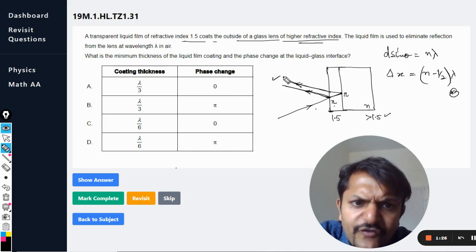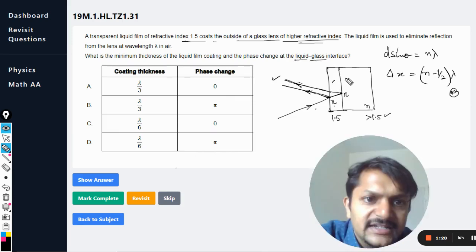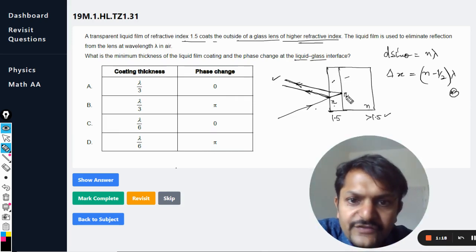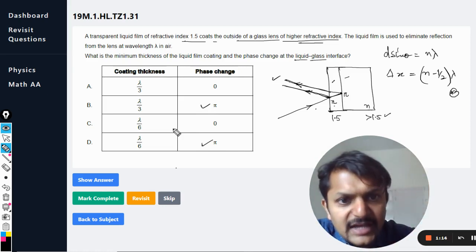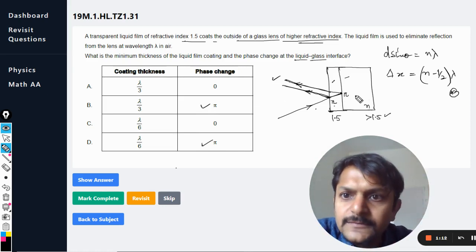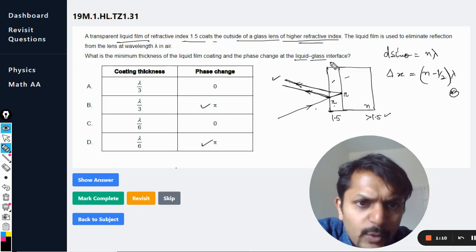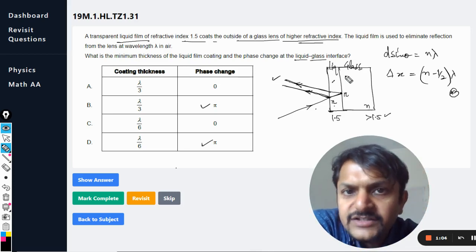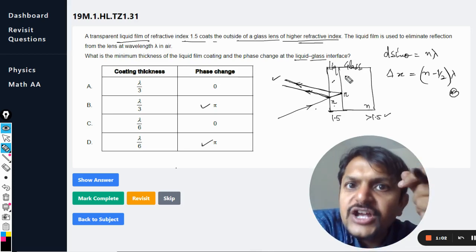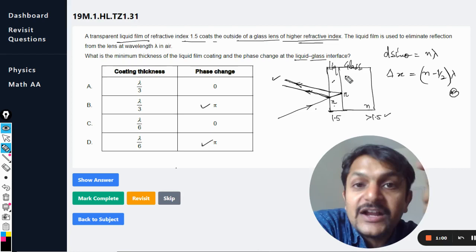So first of all, what is the phase change at liquid-glass interface? So this is liquid and this is glass. What is the phase change? Phase change is pi, it is not zero, because the glass is at a higher refractive index. That is why a phase change of pi will take place when the reflection will take place from the denser medium.